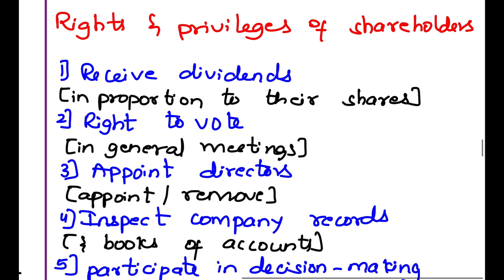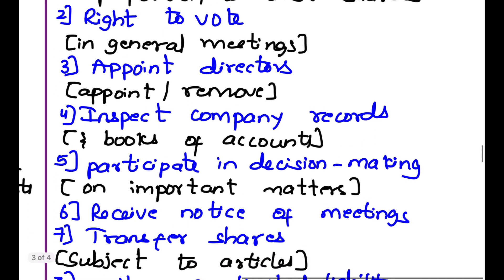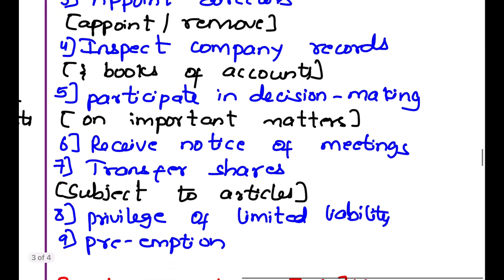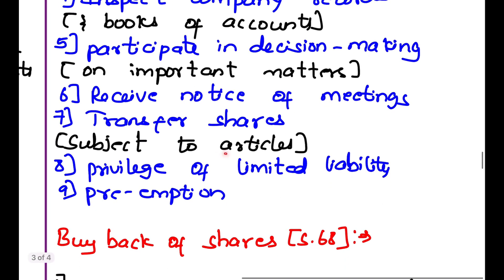Rights and privileges of shareholders: first is to receive dividends in proportion to their shares — whatever amount of shares they hold, they get a proportional dividend. Next is the right to vote in general meetings. Then, the right to appoint or remove any director. Also, the right to inspect company records and books of accounts, participate in decision-making on important matters, receive notice of meetings, and transfer shares subject to conditions and articles.